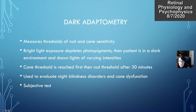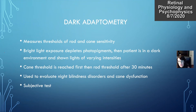Dark adaptometry is not used very commonly at all. It measures thresholds of cone and rod sensitivity. You show the patient a bright light to deplete the photopigments, then put the patient in the dark and show them increasing intensities of light. Typically a cone threshold will be detected first, and then after 30 minutes of dark adaptation you'll start to see the rod threshold. It's used to evaluate night blindness disorders and cone dysfunction, and tends to be a subjective test.